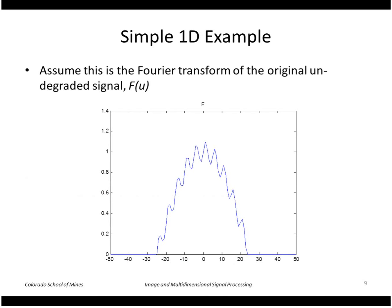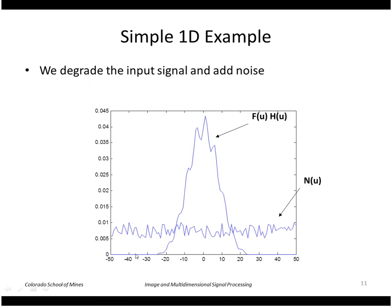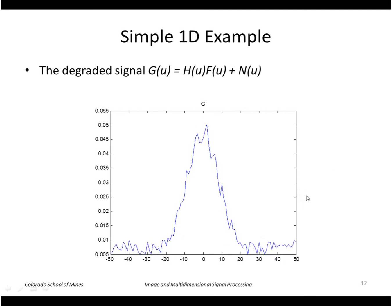To see what this would look like for a simple one-dimensional example, I drew a function F of u, which would represent the original undegraded signal. This is the Fourier transform of the degradation function, basically a Gaussian type blurring. This is the product of f and h, so we're applying the degradation to our original undegraded signal. And then this is some noise we're going to add. So this is the total resulting degraded signal h times f plus n.